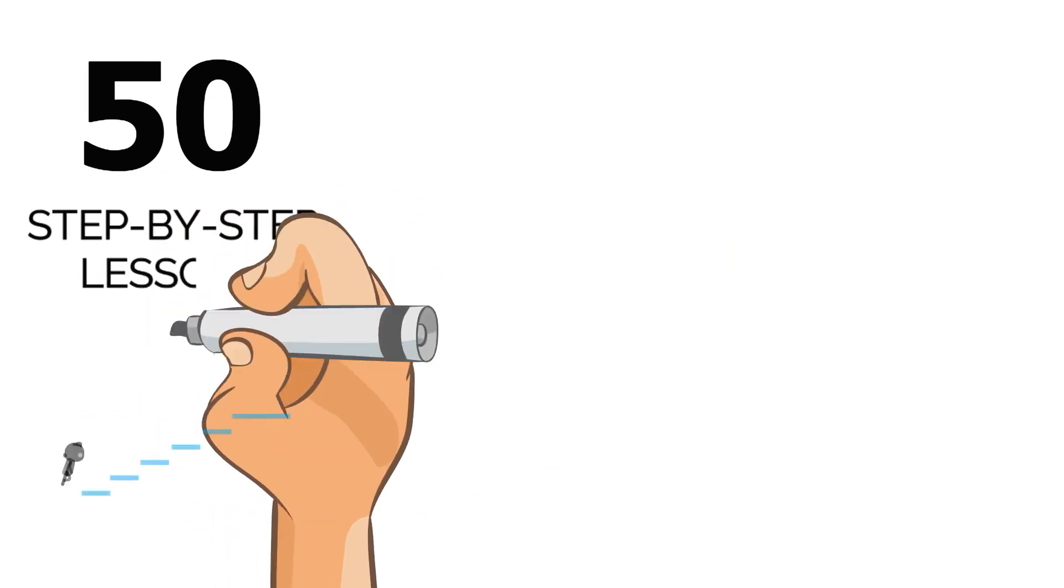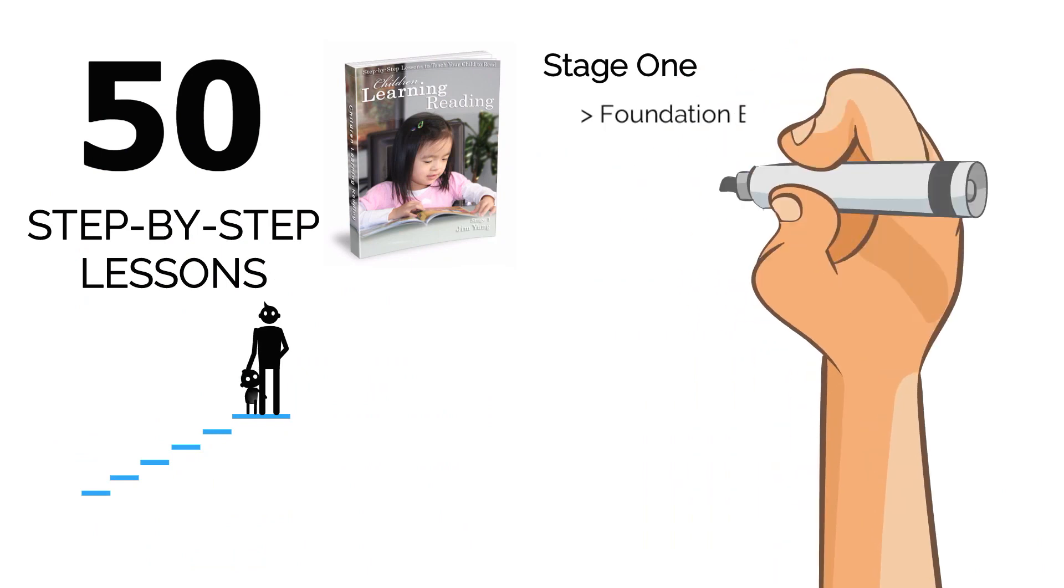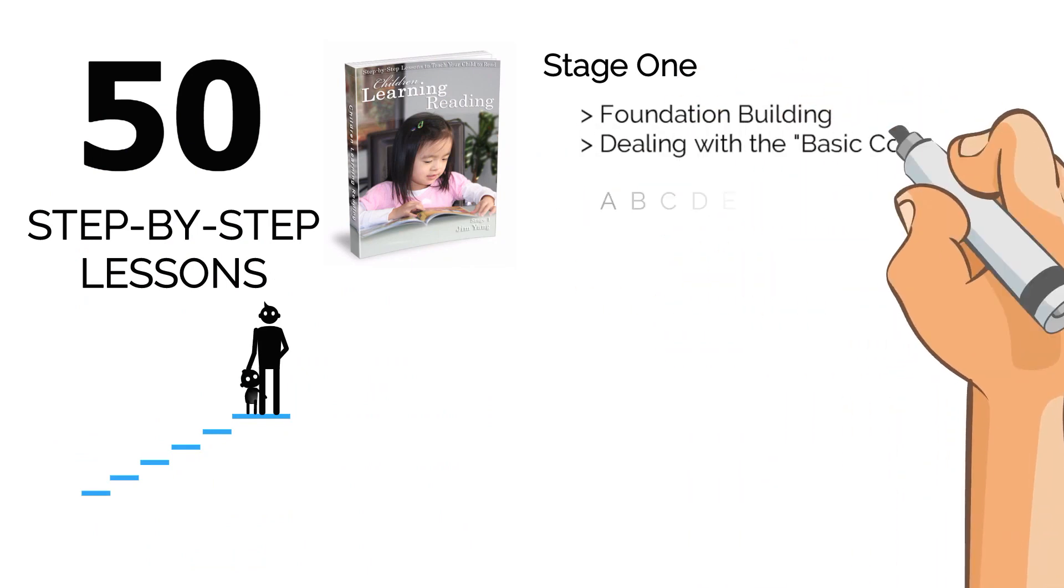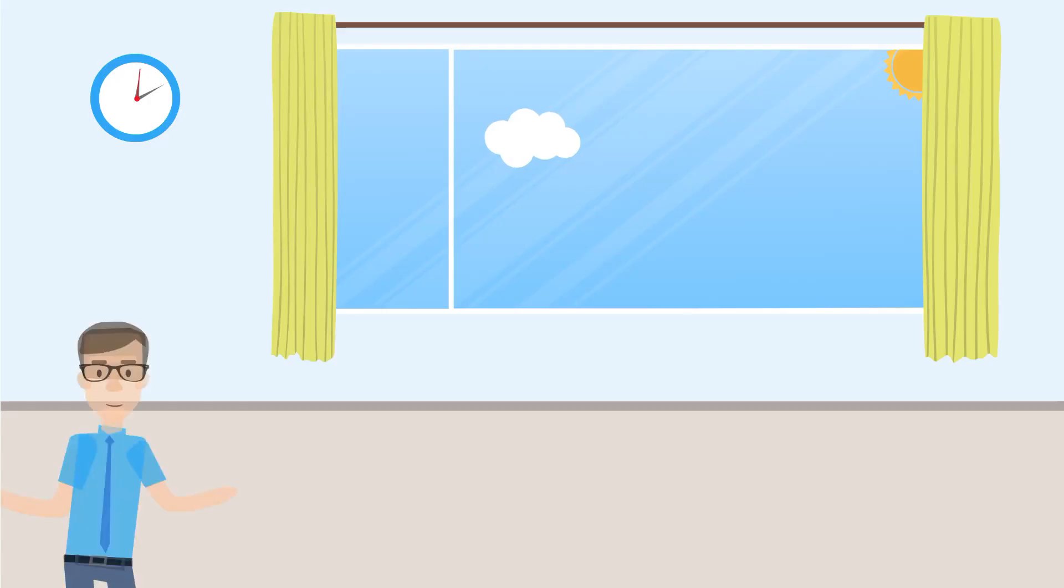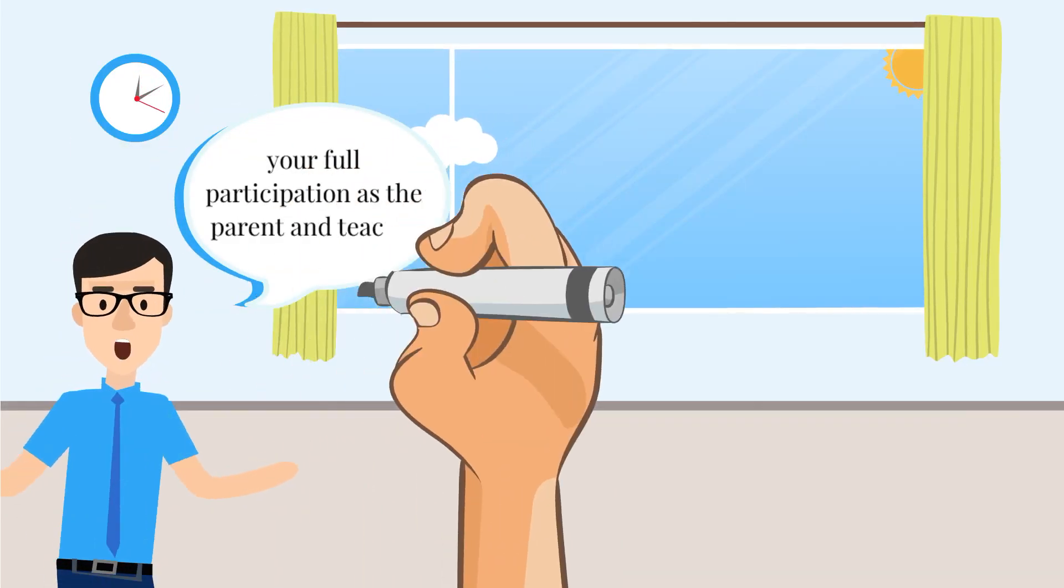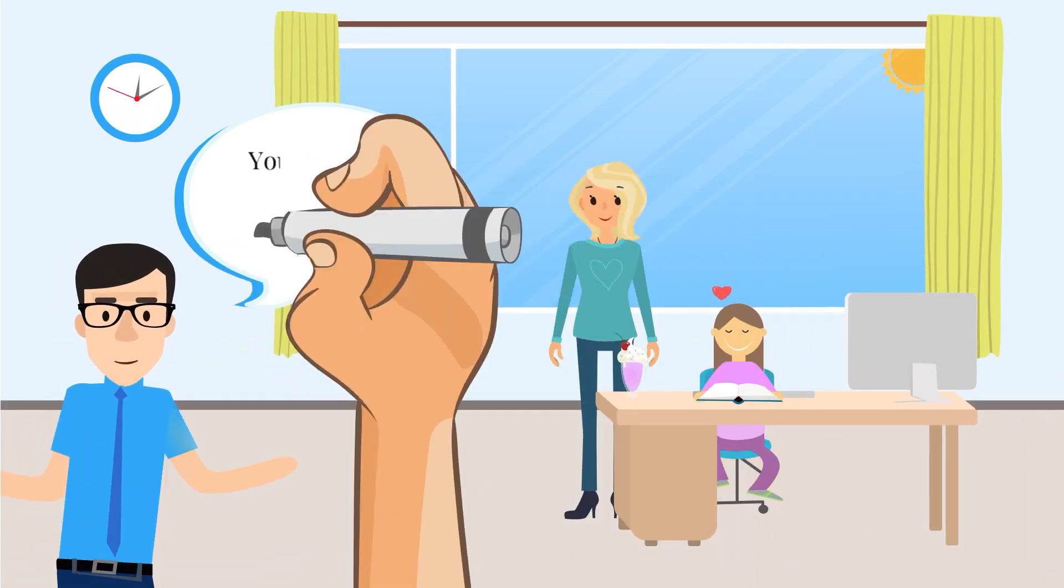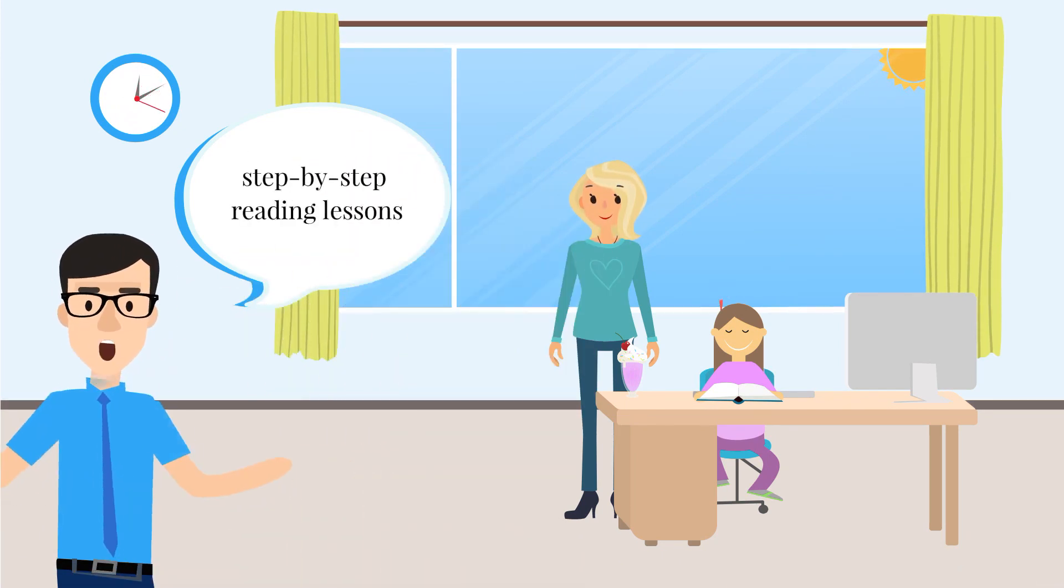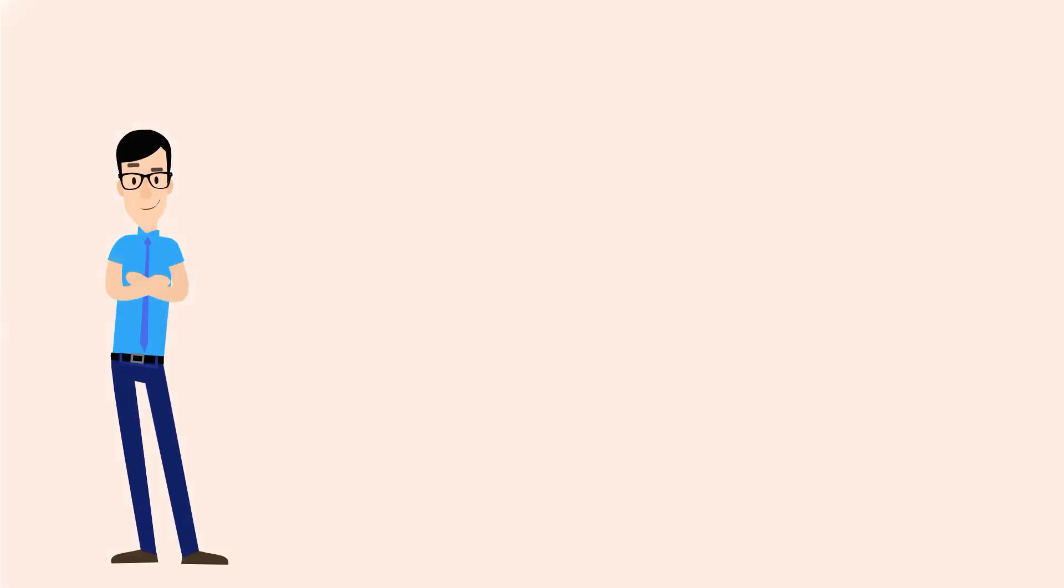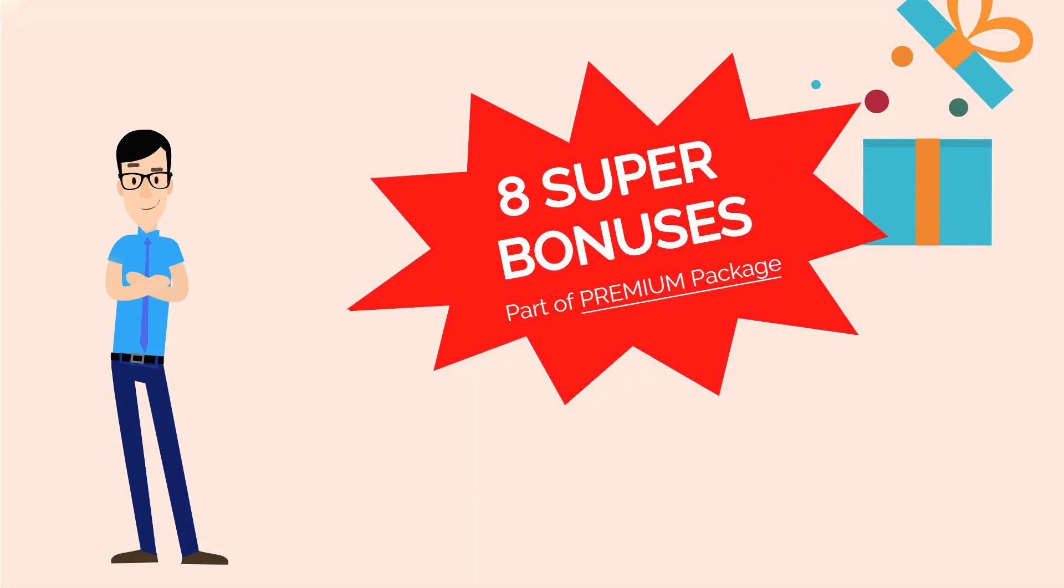The 50 step-by-step lessons of my reading program are presented in two stages. Stage one is the foundation building stage, dealing with the basic code. And stage two deals with more advanced learning, working with the complex code. My reading program requires your full participation as the parent and teacher. You are by far the best teacher for your child. You need to spend 10 to 15 minutes per day working through our step-by-step reading lessons with your child. To make this a super sweet deal for you, and to remove any last bit of doubt you're feeling, I've included eight super bonuses as part of the premium package.